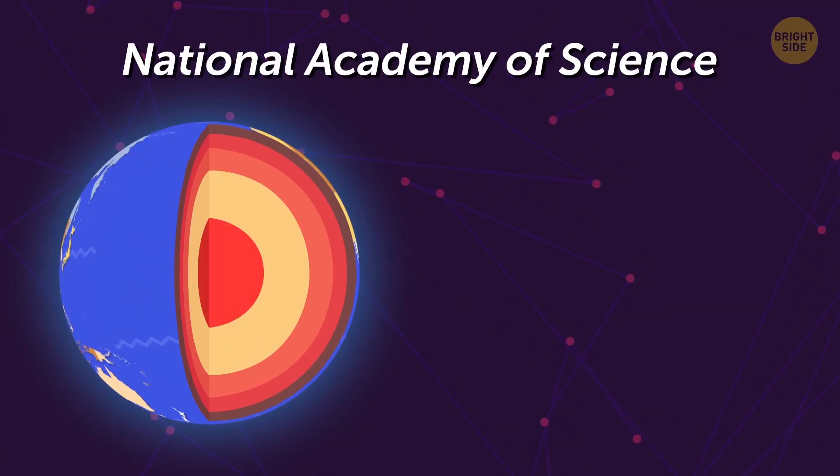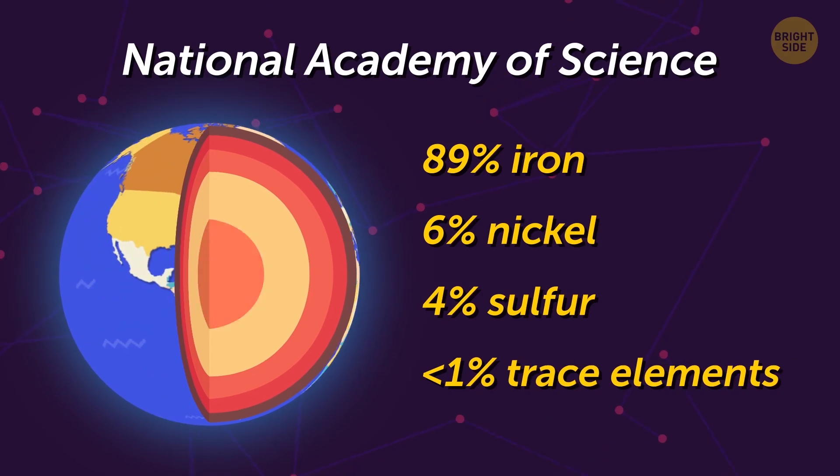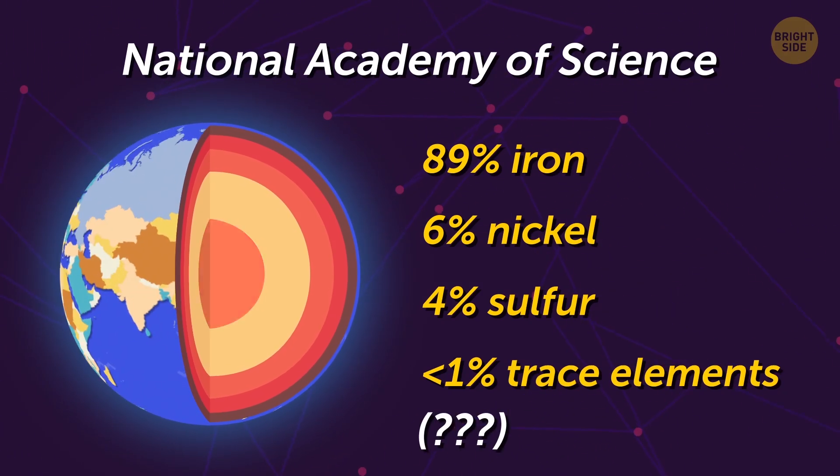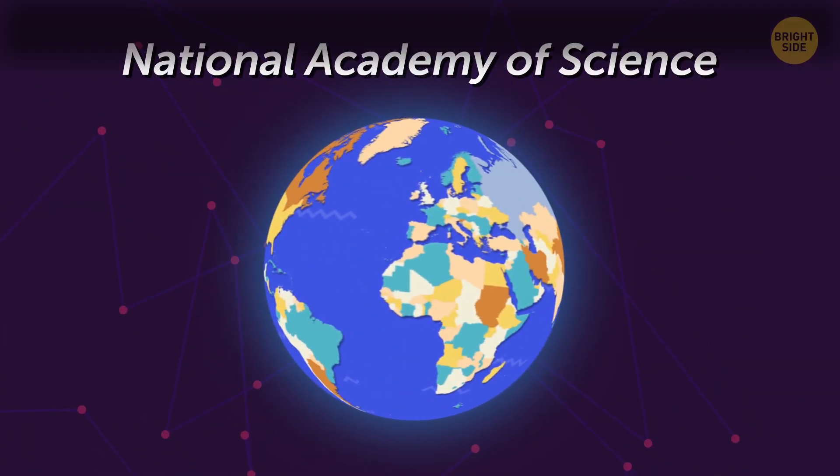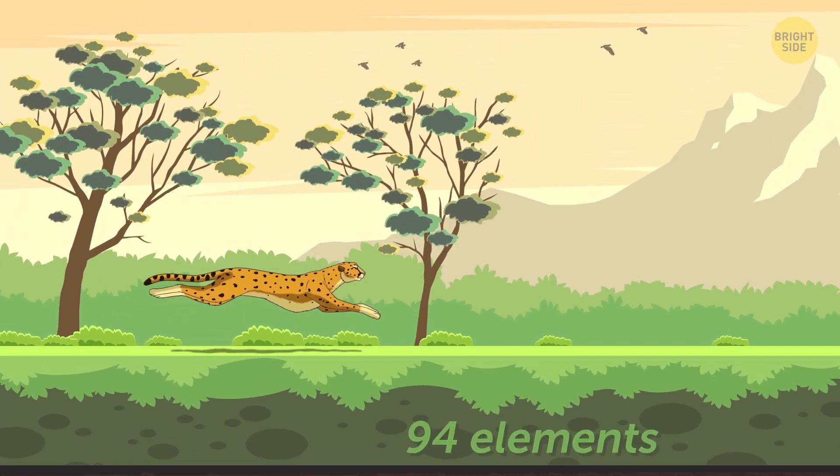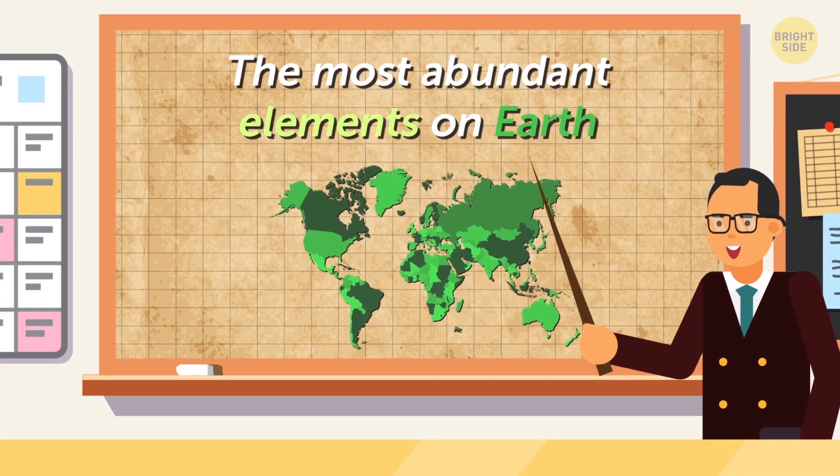According to the National Academy of Science, the Earth's core consists of about 89% iron, 6% nickel, 4% sulfur, and less than 1% trace elements, which means we have no idea what they are. But we do know what's in the Earth's crust. There are 94 elements that occur naturally on Earth. To find the rarest, let's start with a few of the most abundant.